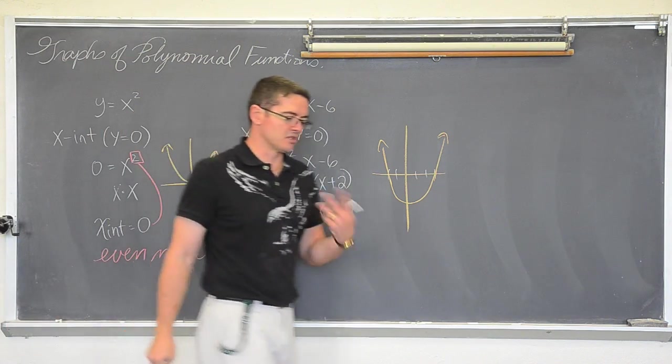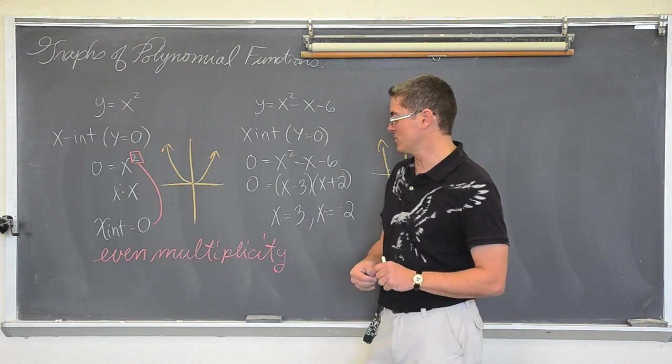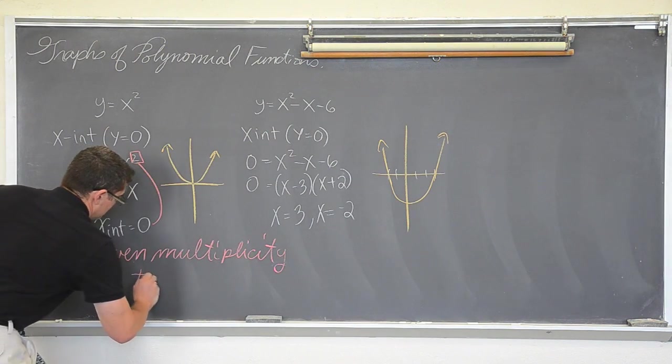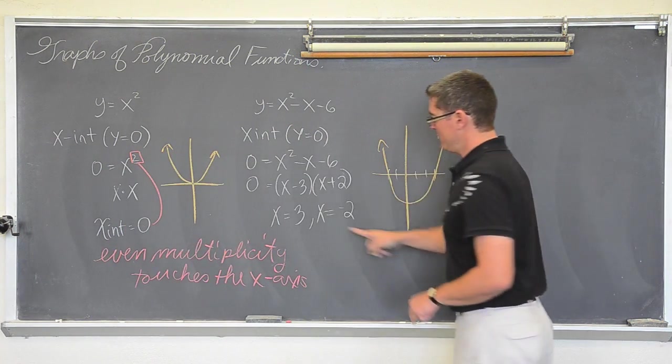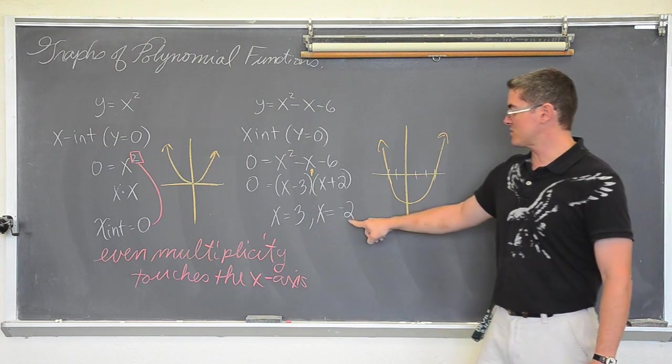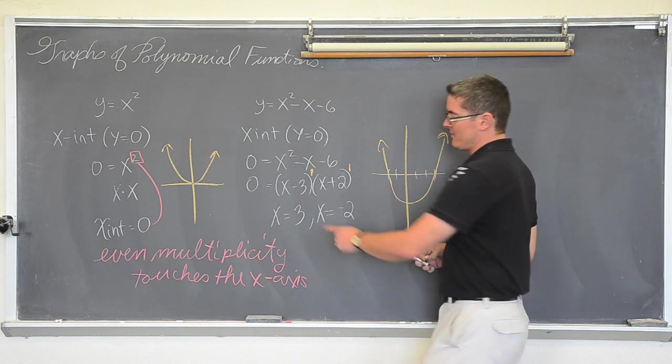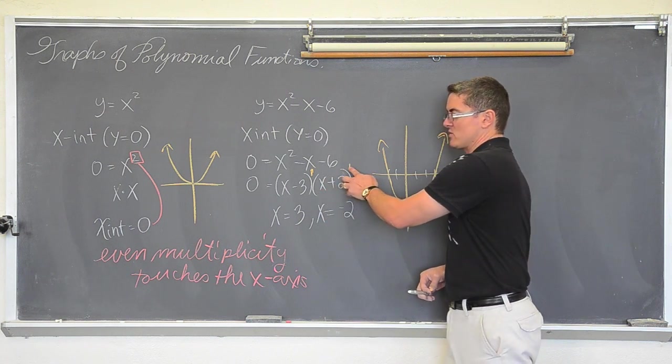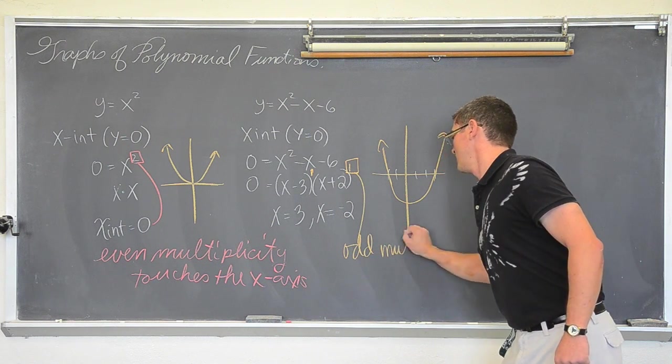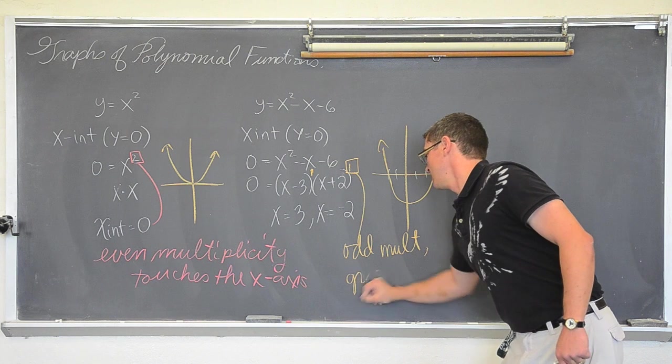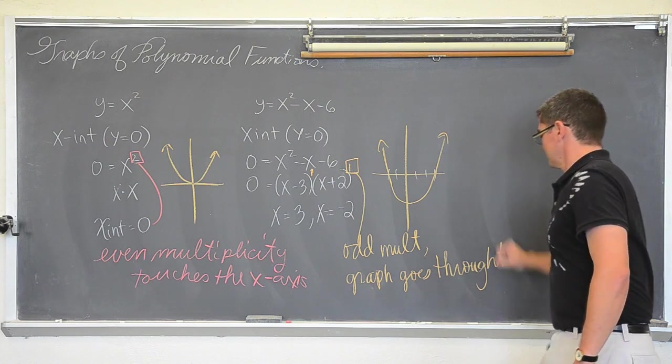When a zero, a solution root zero x-intercept has an exponent that is even or shows up two, four, six or whatever times in your solution, that means that it touches the x-axis. Here, this three came from a factor that had an exponent that was odd. The negative two came from a factor that has an odd exponent. I know I just misspoke there for a second, but the three came from here which had an odd power. The negative two came from this factor which had an odd power. When you have an odd multiplicity, then the graph goes through those points.